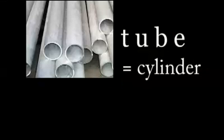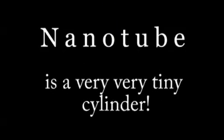Tube is a cylinder. Everyone knows what a tube is. So a carbon nanotube is a very, very tiny cylinder, a tube-shaped molecule made of carbon.